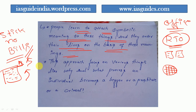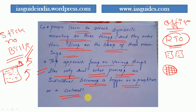The symbolic interaction approach also focuses on why and through what process an individual becomes a beggar, prostitute, or criminal. These are very complex questions that are examined through the interactionist perspective — analyzing the processes and interactions that lead a person into such situations.